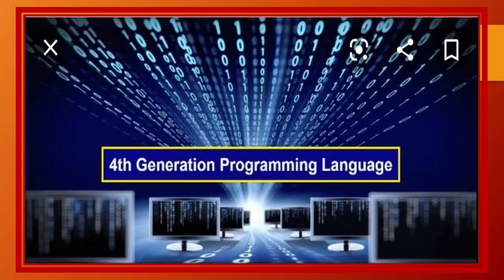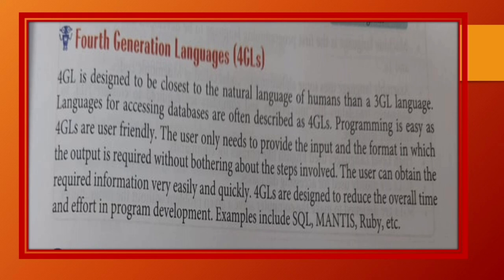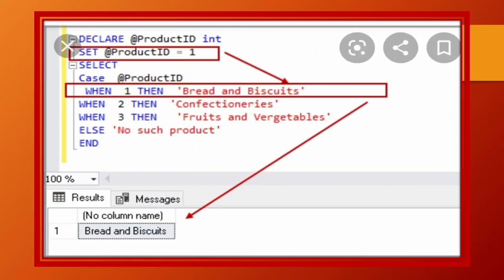Fourth generation languages is designed to be closest to the natural language of humans than a third generation language. Languages for accessing databases are often described as four-generation languages. Programming is easy as four-generation languages are user-friendly. The user only needs to provide the input and the format in which the output is required without bothering about the steps involved. Means user ko sirf input deni hoti hai aur results ka format dena hoti hai aur usse result bina kisi step ko jaane bohut asani se aur jaldi mil jata hai. Four-generation languages are designed to reduce the overall time and efforts in program development. Examples include SQL, Mantis, Ruby, etc.